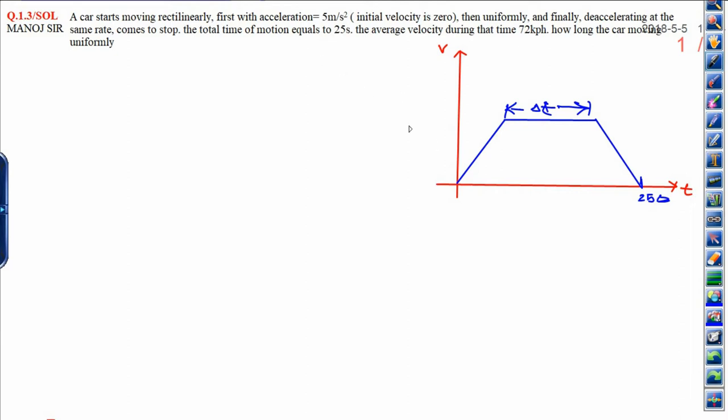First, the car accelerates at 5 meters per second squared with initial velocity taken as zero, then moves uniformly, and finally decelerates at the same rate. Same rate means whatever acceleration it has, it is 5 meters per second squared.